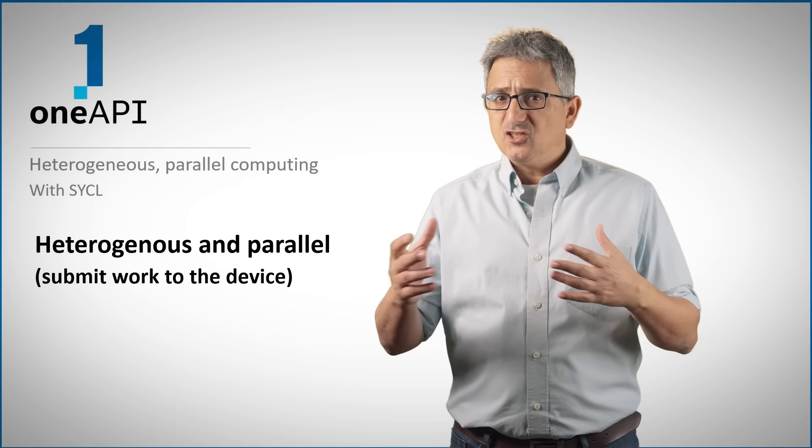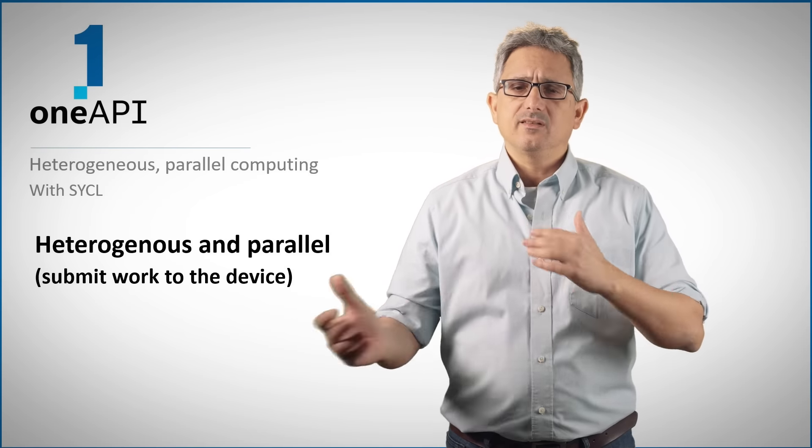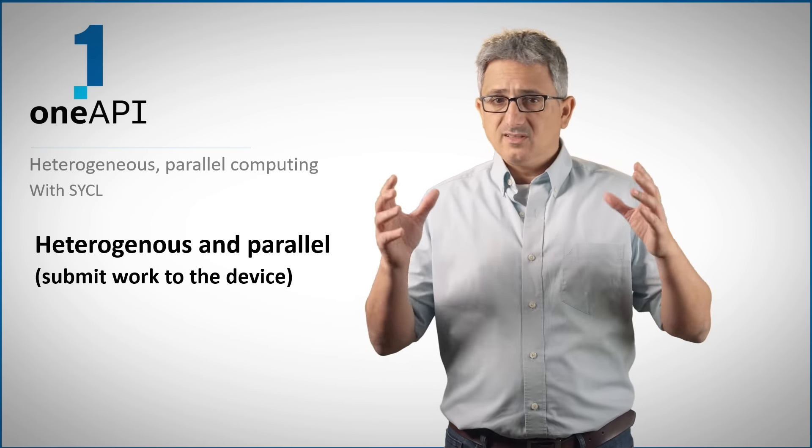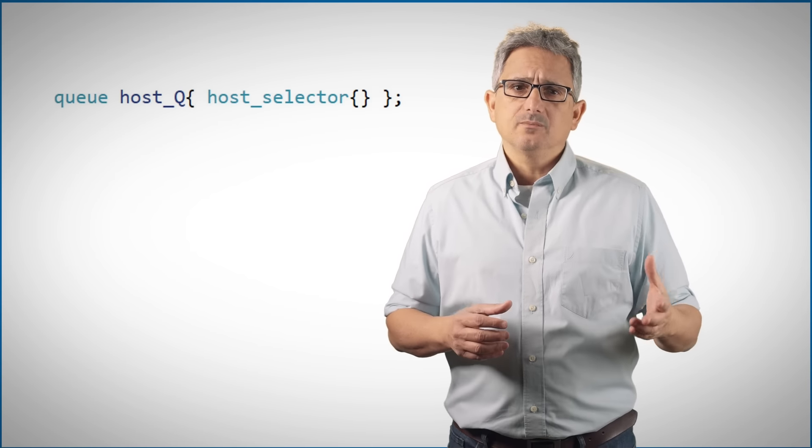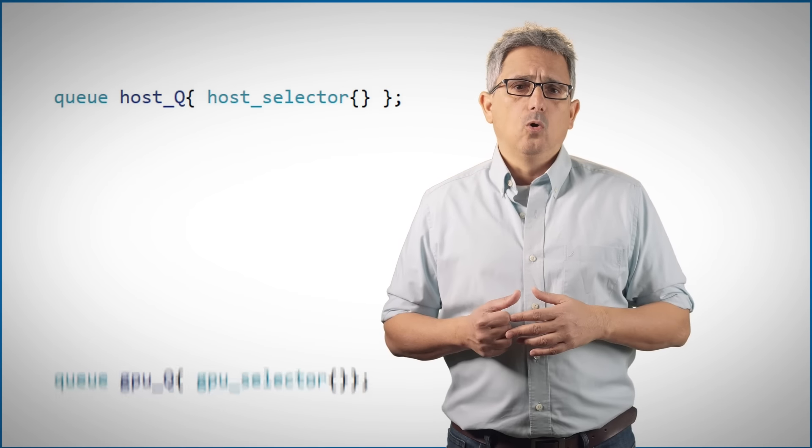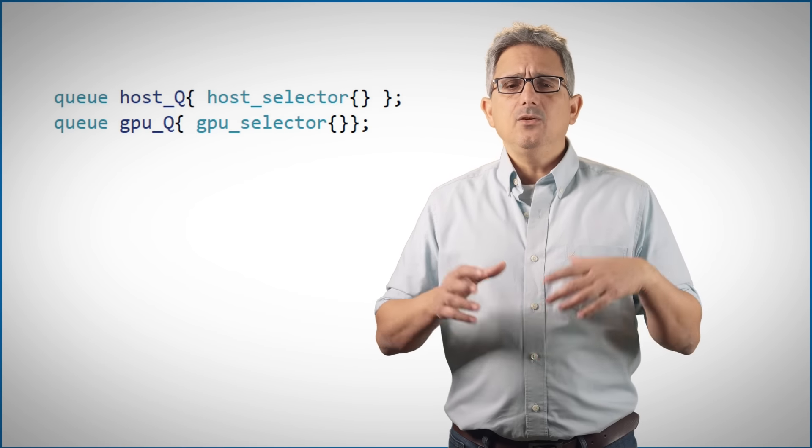How do you exchange data so the host and the device can see the same data or the same memory space? In the previous video we chose the device we'd like to use and assigned a queue to this device using a predefined selector, for example a host selector or a GPU selector, and you can even build a custom selector.